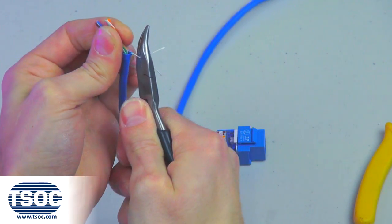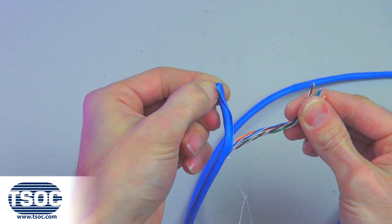Use the pull string to strip the jacket a further six inches. Step 3.